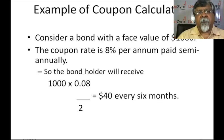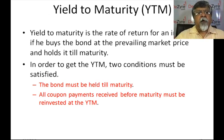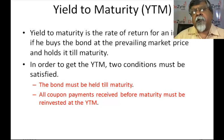So in this case, the bond will receive a payment of $40 every six months.